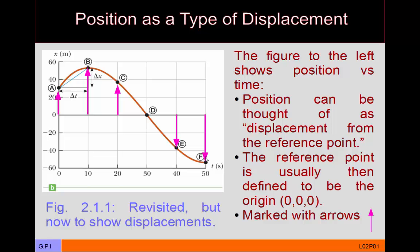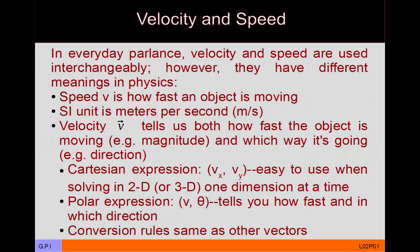Now I want to talk about velocity and speed. Unfortunately in everyday parlance velocity and speed are used interchangeably, but in physics they have different meanings. Speed tells you just how fast the object is moving — it's a scalar, just a number. The object has a speed of 30 meters per second, or 30 miles per hour.